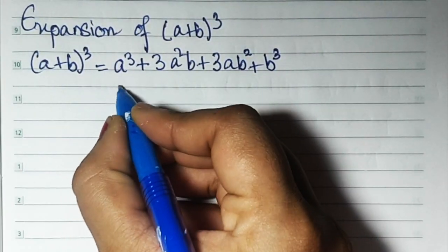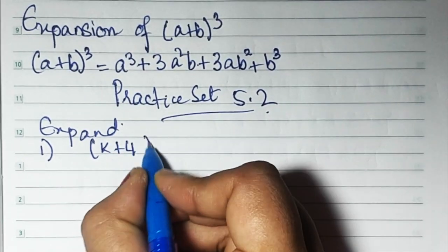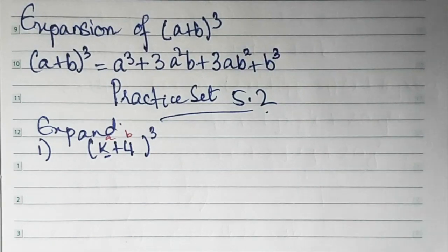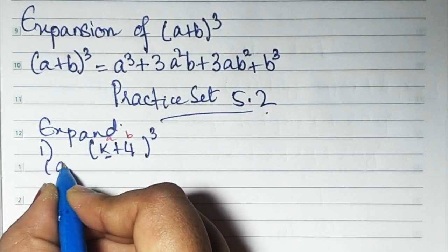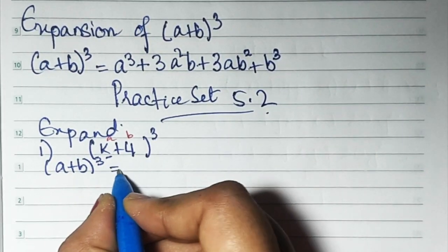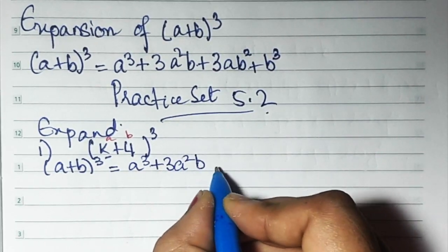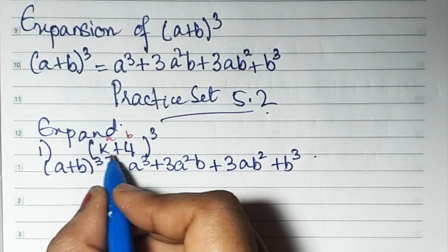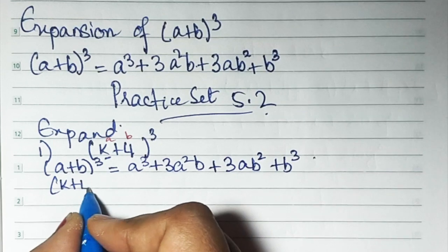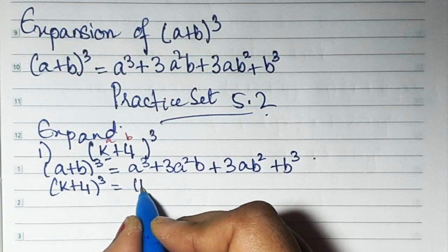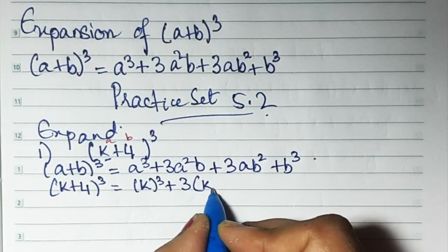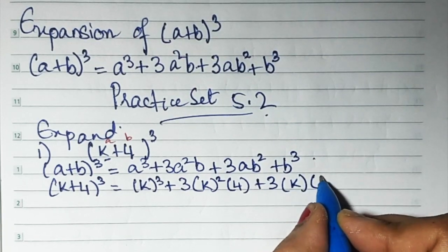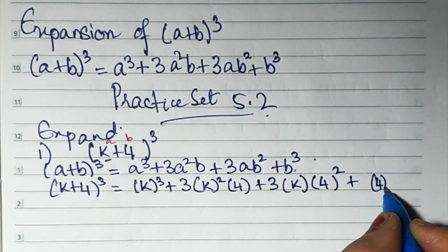Now we'll start Exercise 5.2. First, write the formula: (a + b)³ = a³ + 3a²b + 3ab² + b³. Now substitute — the sum is (k + 4)³, so instead of a I'll put k: k³ + 3k² × 4 + 3k × 4² + 4³.